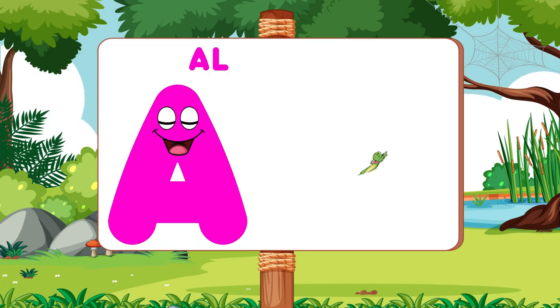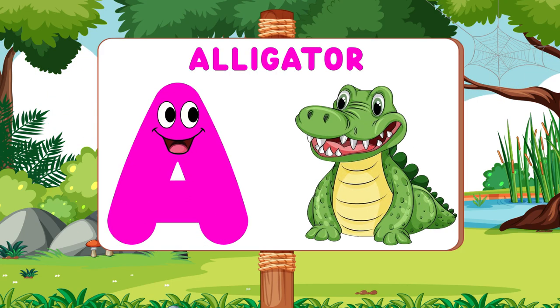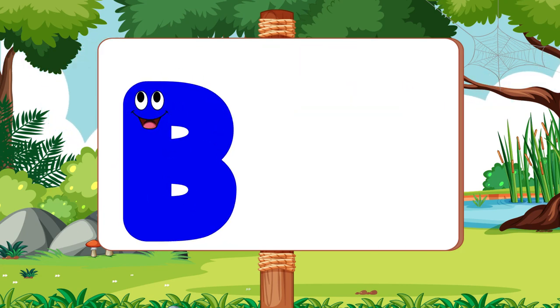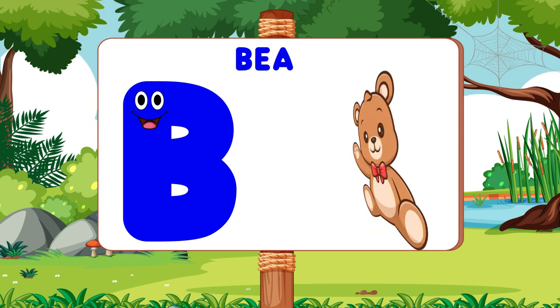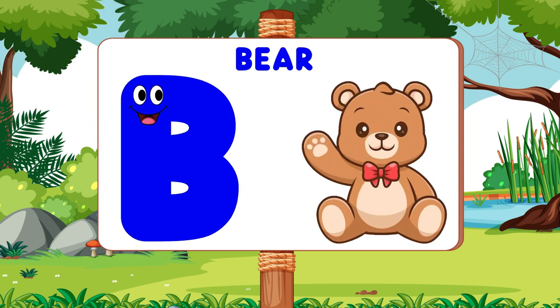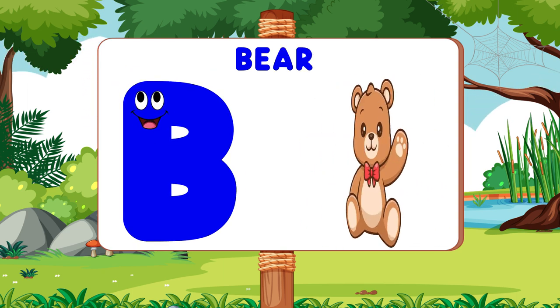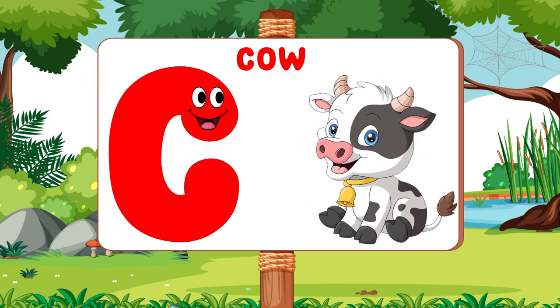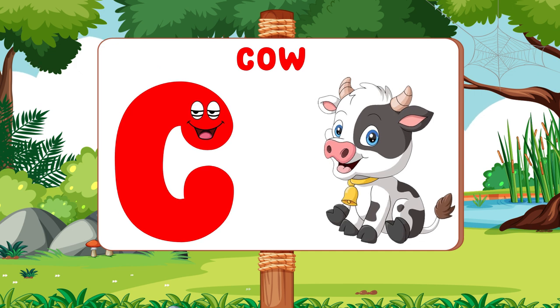A is for Alligator. A, A. Alligator. B is for Bear. B, B. Bear. C is for Cow. C, C. Cow.